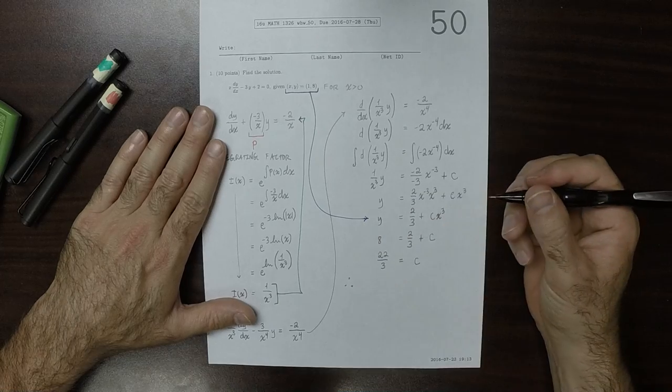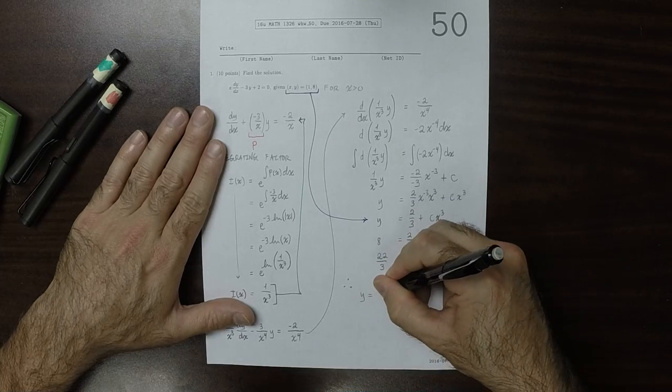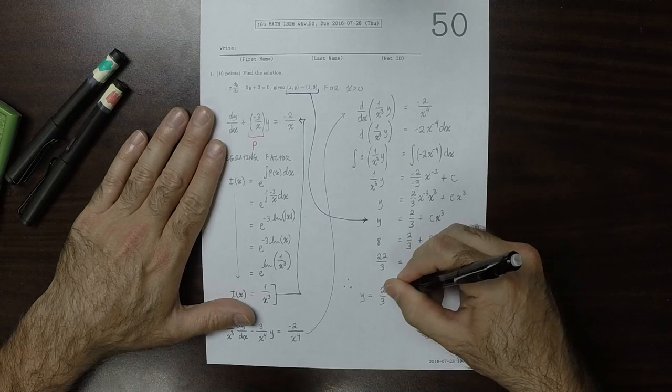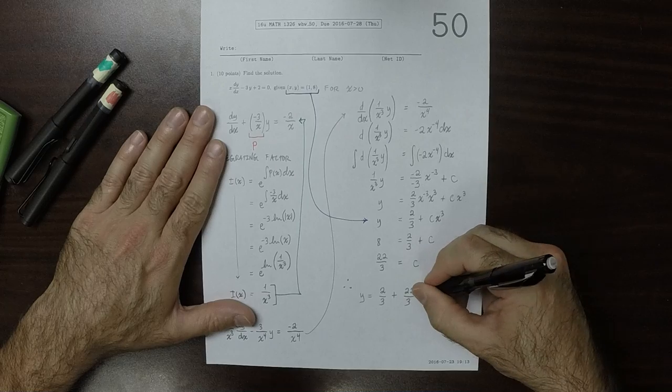Therefore, the answer to the exercise is y equals 2/3 plus 22/3 x cubed.